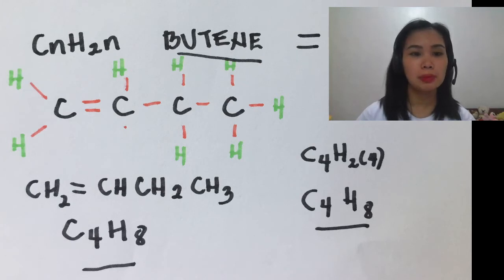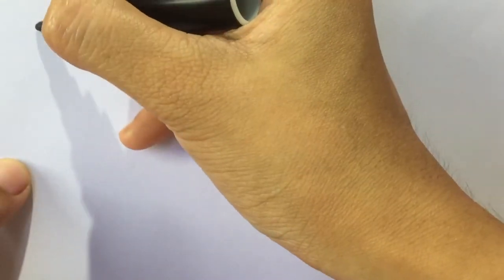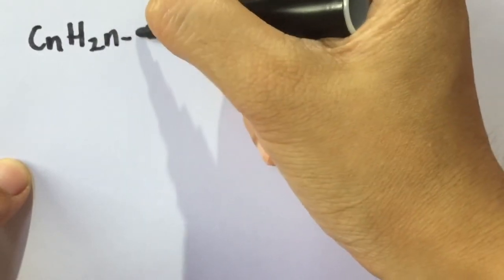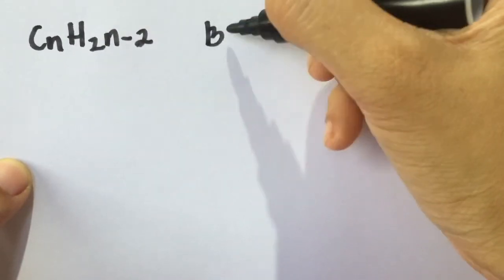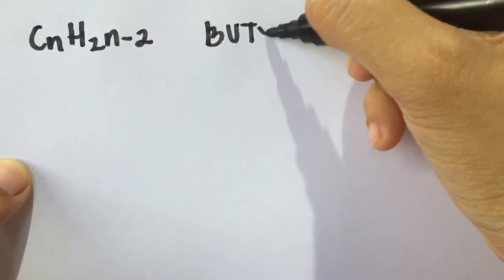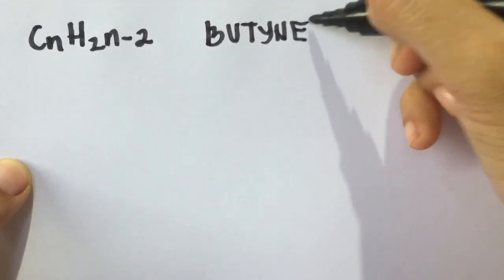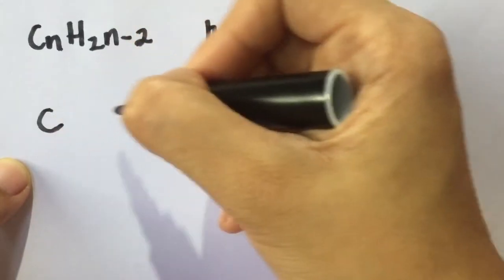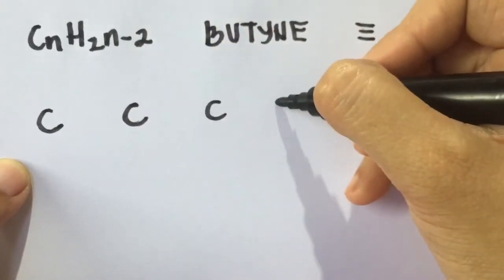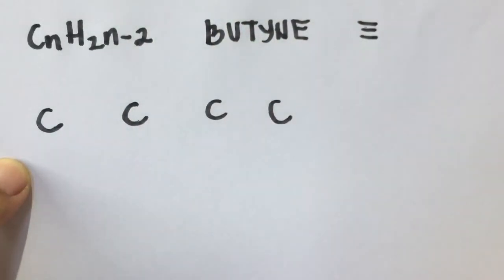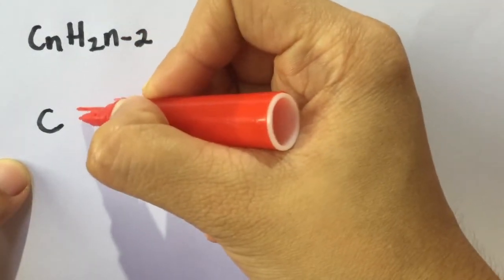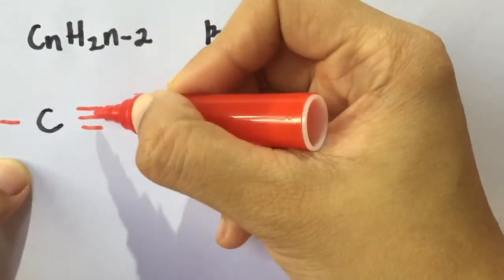How about the triple bond? It's the butyne. We have here CnH2N minus two. That's the general formula of an alkyne. So our name is butyne, that means triple bond. So again, unahin natin i-draw si carbon: three and four. And then we have to use another color to emphasize the triple bond. So I'm going to start from the first part ng carbon: three and four, three and four.